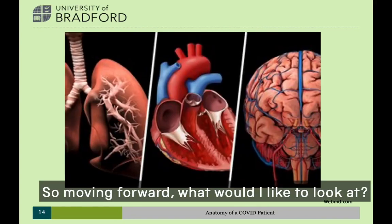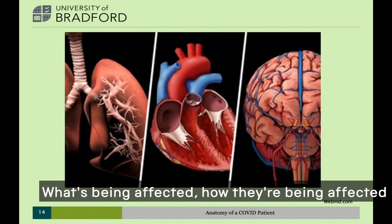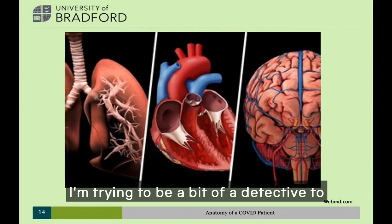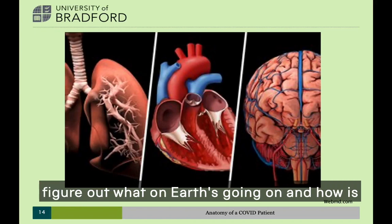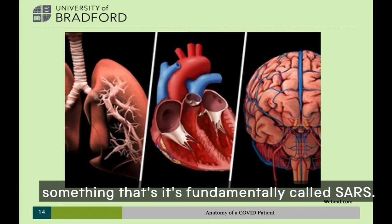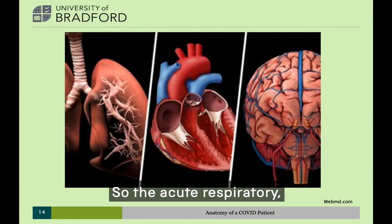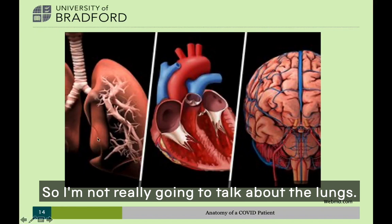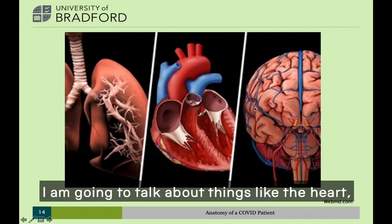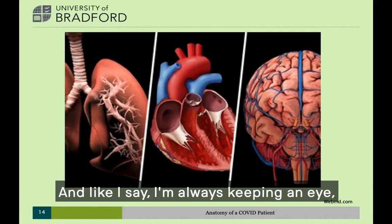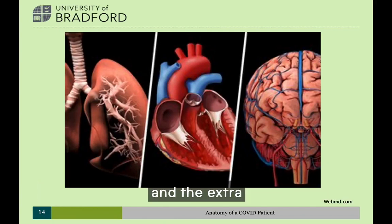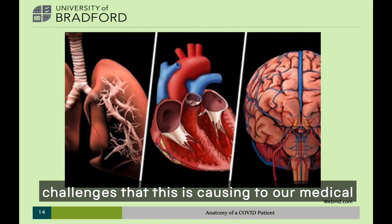Moving forward, I want to look at other organ systems — what's being affected, how they're being affected in terms of what's changing within them — trying to be a bit of a detective to figure out what on earth is going on. How is something fundamentally called SARS — Severe Acute Respiratory, to do with the lungs — affecting everything else? So I'm not really going to talk about the lungs; I'm going to talk about things like the heart, the brain, and other organs, while keeping an eye on the treatment of these people and the extra challenges this is causing to our medical system.